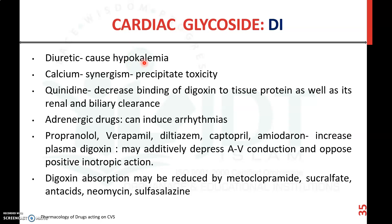Drug interactions of cardiac glycosides: with diuretics, they produce hypokalemia. With calcium preparations, they synergize the action and may precipitate toxicity. With quinidine, they decrease the binding of digoxin to tissue proteins and reduce its renal and biliary clearance. With adrenergic drugs, they can produce arrhythmia. Propranolol, verapamil, diltiazem, captopril, and amiodarone increase plasma digoxin concentration and additively depress AV conduction, opposing positive inotropic action.